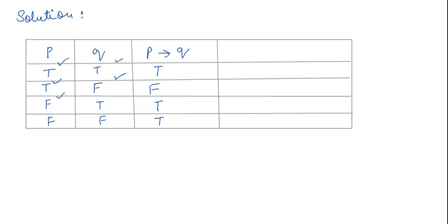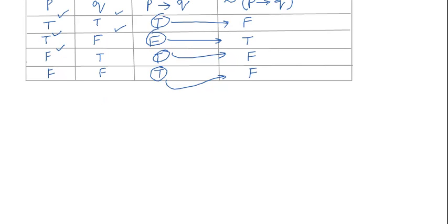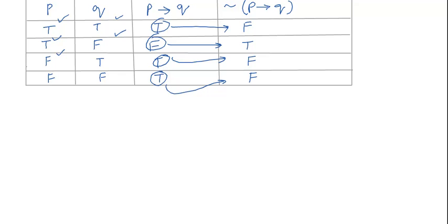Now we need to find the negation of 'if p then q.' The true values become false and the false value becomes true. So the negation column reads: false, true, false, false. We can see that this is equal to p conjunction negation q. Therefore, the negation of 'if p then q' is the same as p conjunction negation q.